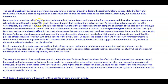For example, a procedure called vertebroplasty, where medical cement is pumped into a spine fracture, was tested through a designed experiment. All subjects went through a surgery to repair the spine, but only half received the medical cement. An interesting outcome resulted: a subject in the placebo group found that the procedure resulted in complete abatement of back pain even though she did not receive the medical cement.